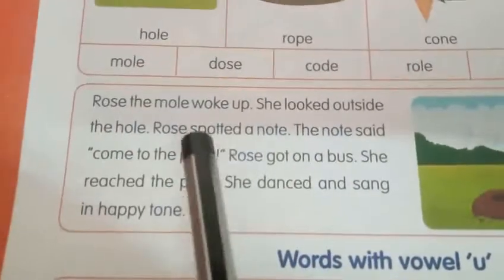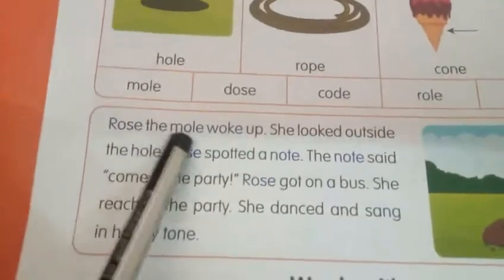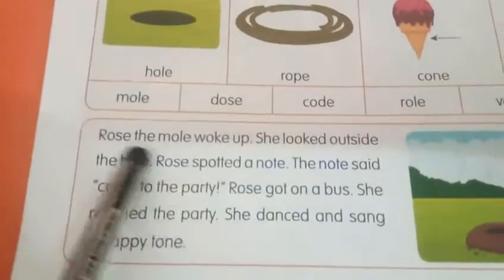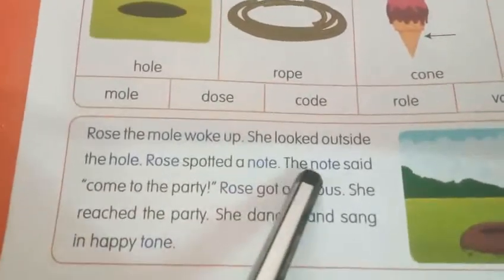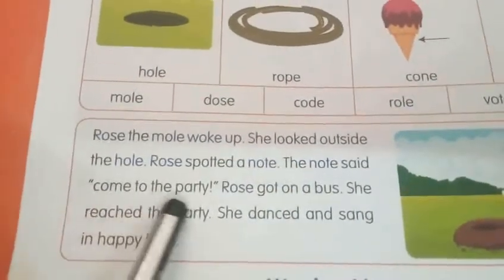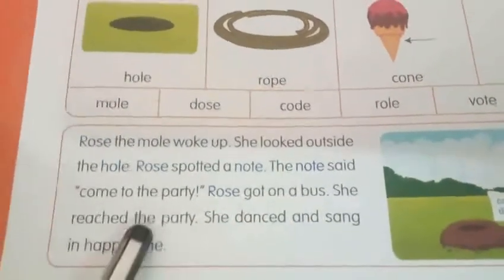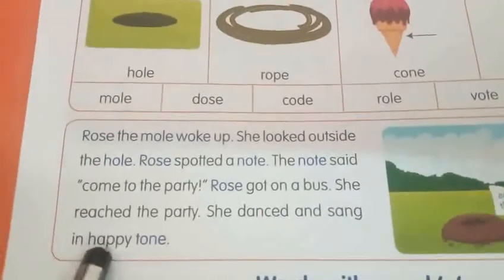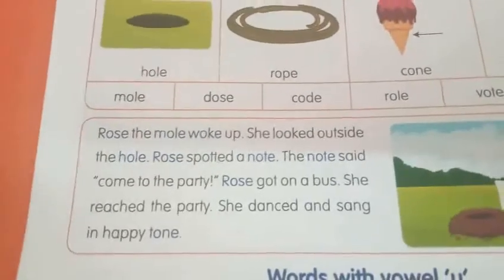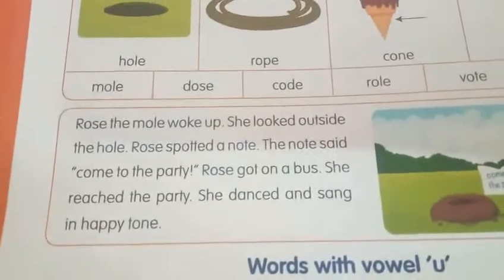Again, I will read the story — you also come along and read with me. Rose the mole woke up. She looked outside the hole. Rose spotted a note. The note said, come to the party. Rose got on a bus. She reached the party. She danced and sang in a happy tone. From your home, you will read this magic word with vowels on O.